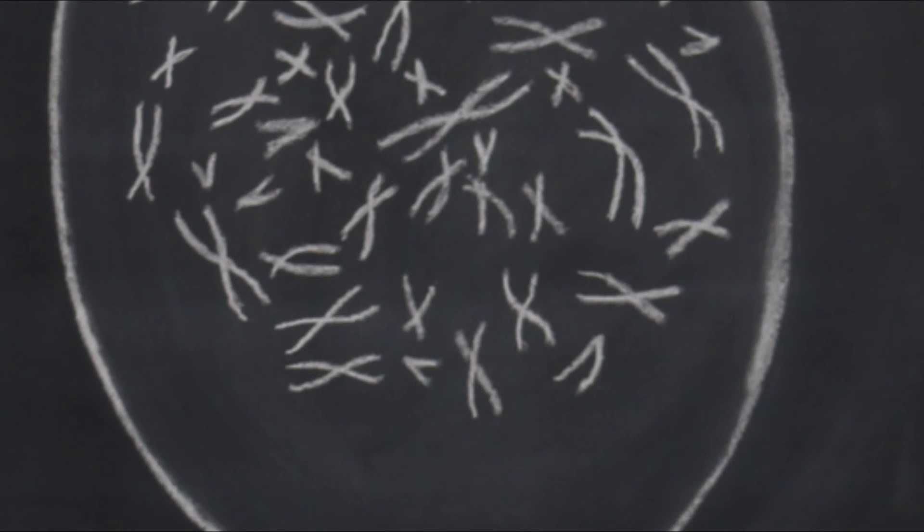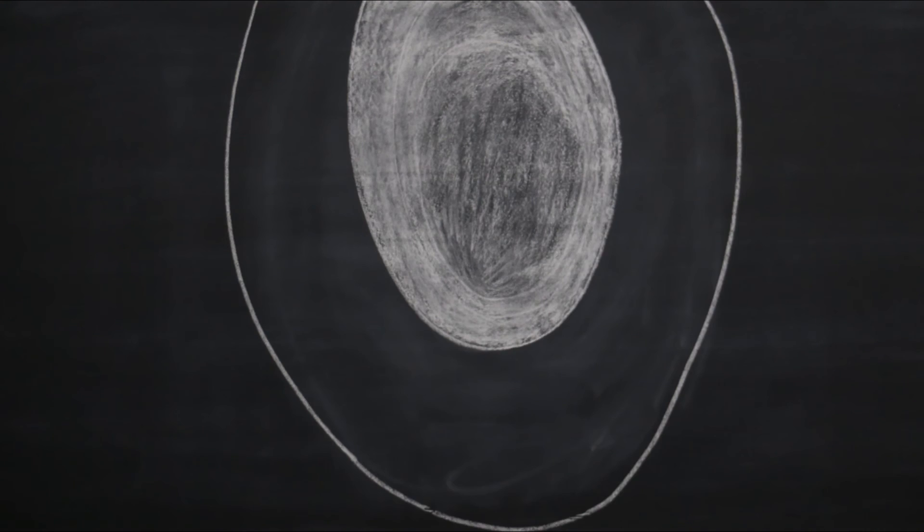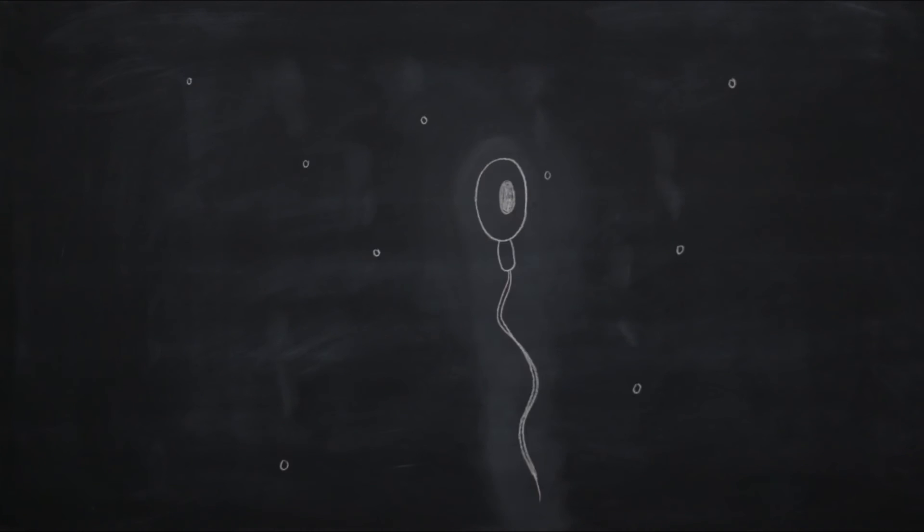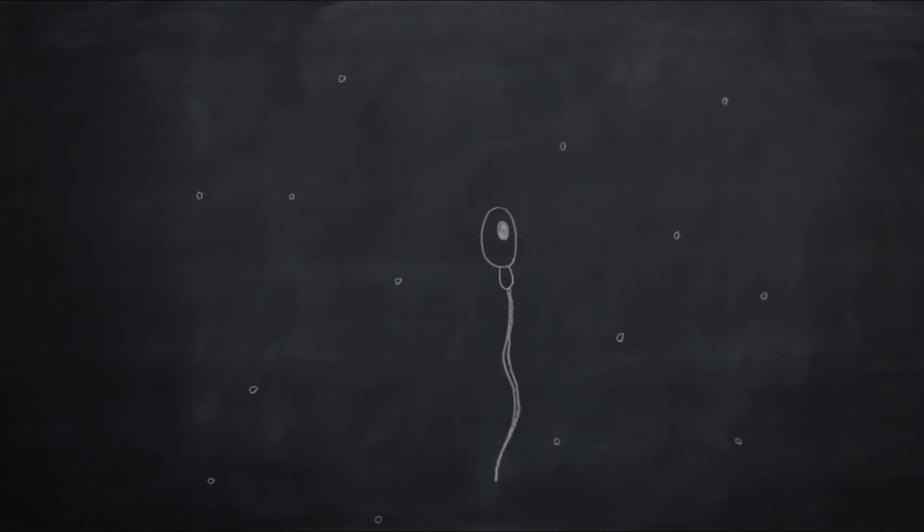Thus, it appears that our DNA is not so immutable across generations after all. What we expose our own bodies to can have an effect on gene expression in our offspring and grand offspring.